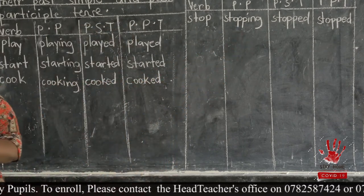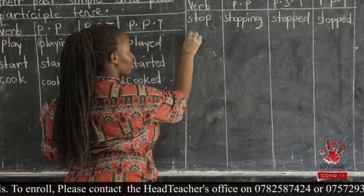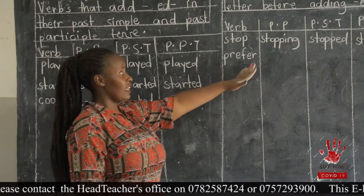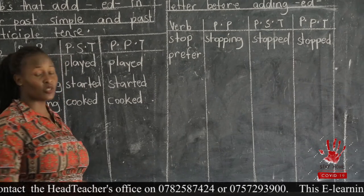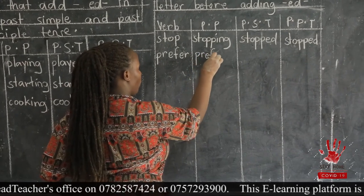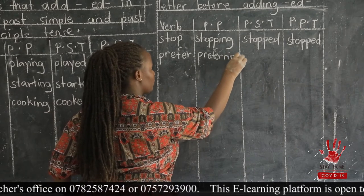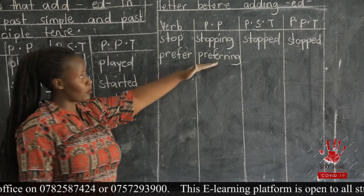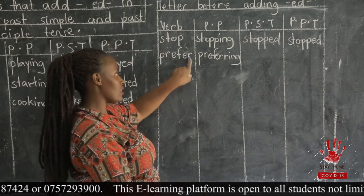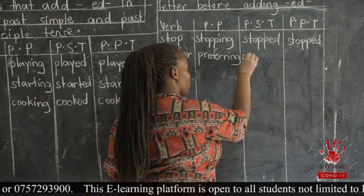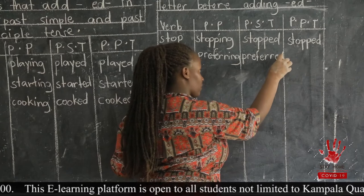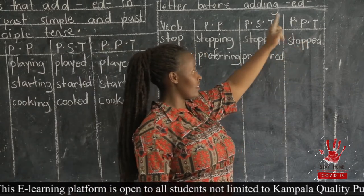The second example of a word that doubles its last letter is 'prefer.' Prefer is also a verb. In its present participle, we double the last letter and the word becomes 'preferring.' When changing it to the past simple, we remove the ING, double the last letter, and add ED. The word becomes 'preferred.' The same applies to the past participle.